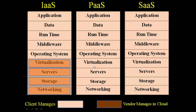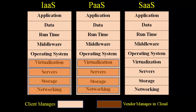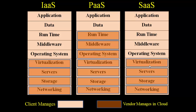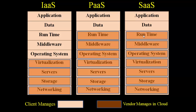If you go for platform as a service, the cloud manages infrastructure — networking, storage, server, and virtualization — plus the platform, which means operating system, middleware, and runtime. The client only needs to manage the application and data. If you go for software as a service, the cloud provides all services: infrastructure, platform, and application and data — so everything is managed by the cloud.